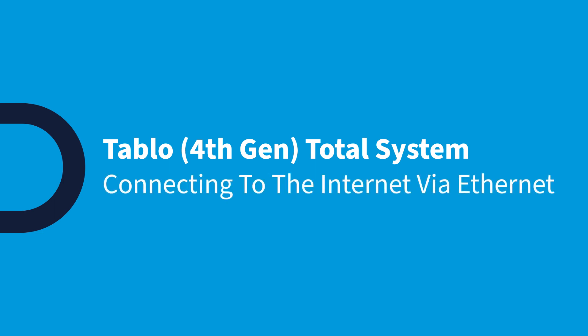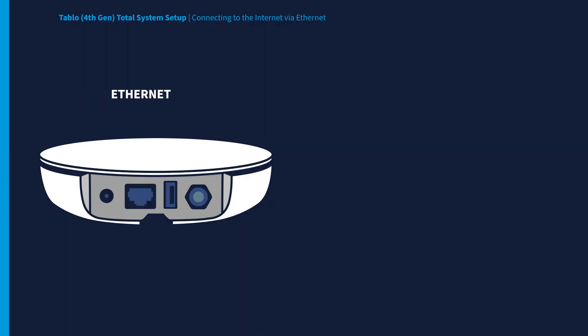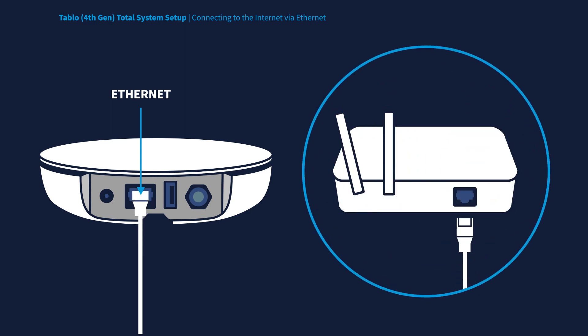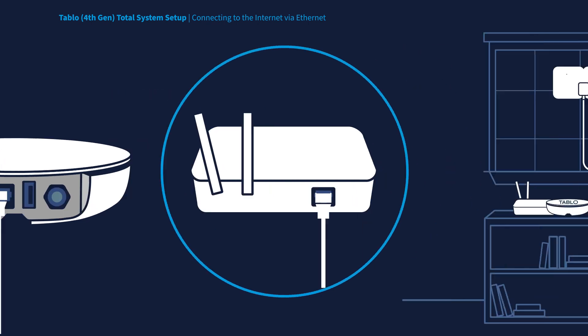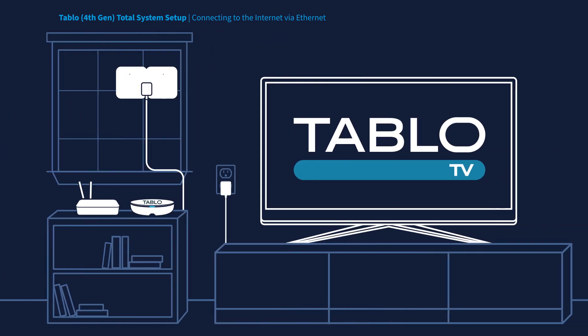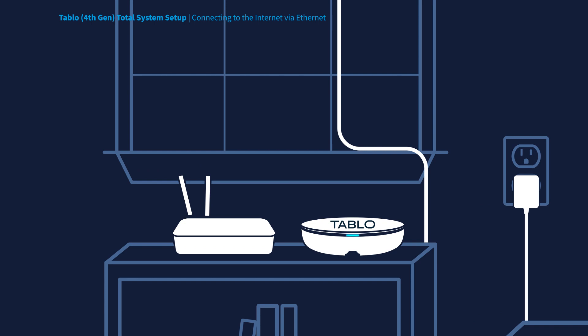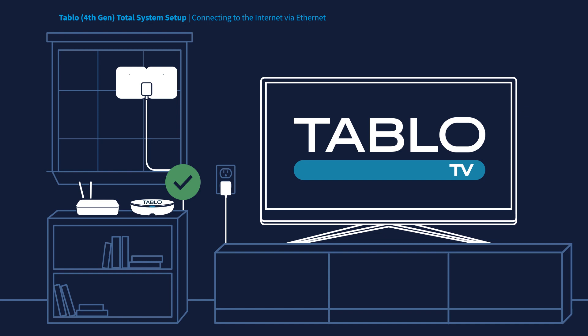To connect Tableau to the Internet via Ethernet, simply ensure one end of the included Ethernet cable is connected to your Tableau's Ethernet port, and the other end is connected to your home router. Once your Tableau is connected via Ethernet and powered up, simply wait for the blue LED light on the Tableau device to stop blinking and become solid. Your Tableau should now be connected to your home network.